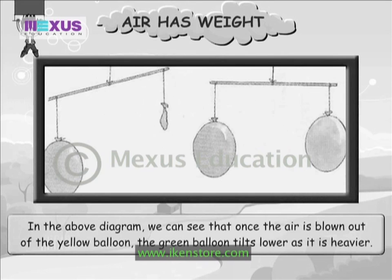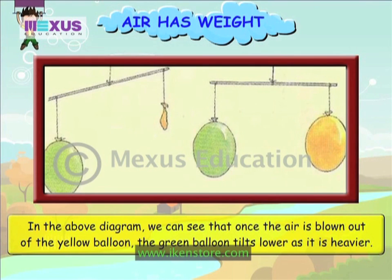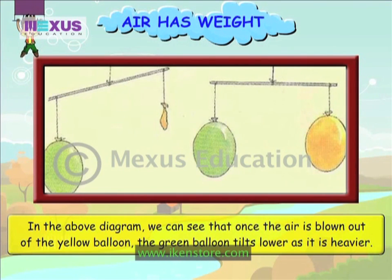In the above diagram, we can see that once the air is blown out of the yellow balloon, the green balloon tilts lower as it is heavier.